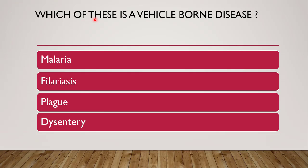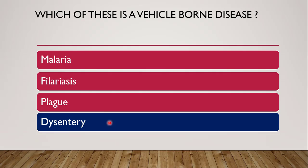Next question: which of these is a vehicle-borne disease? Vehicles include liquid mediums like water, milk, fruit juices, blood, and blood products. Malaria, filariasis, and plague are vector-borne, not vehicle-borne. The correct answer is dysentery, because it is a vehicle-borne disease transmitted through liquid mediums such as water, milk, juices, and blood products.